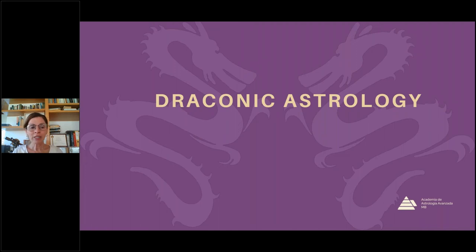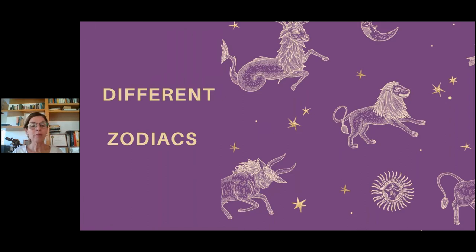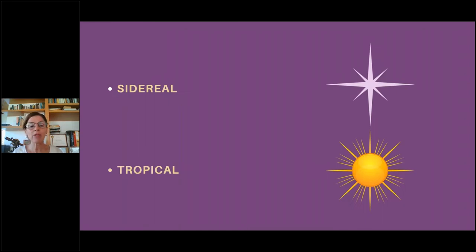When we talk about draconic astrology, what we have to bear in mind is that there are different kinds of zodiacs. A zodiac depends on the starting point that one uses. For instance, we have the sidereal zodiac and the tropical zodiac, which is the one that we most commonly use in the western hemisphere.